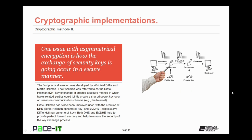One issue with asymmetrical encryption is how the exchange of security keys occurs in a secure manner. The first practical solution was developed by Whitfield Diffie and Martin Hellman — referred to as the Diffie-Hellman, or DH, key exchange. It created a secure method in which two unrelated parties could jointly create a shared secret key over an unsecure communication channel, such as the internet. Diffie-Hellman has since been improved upon with DHE — Diffie-Hellman Ephemeral Key — and ECDHE — Elliptic Curve Diffie-Hellman Ephemeral Key — both of which help provide perfect forward secrecy.